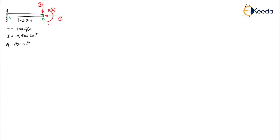This is similar to the first problem we have solved, but here the directions of the coordinates are slightly varying and the numbers also are varying. Now, it has 3 coordinates. So your flexibility matrix will be of the order 3 by 3. However many coordinates are there, that will be the size of your flexibility matrix.